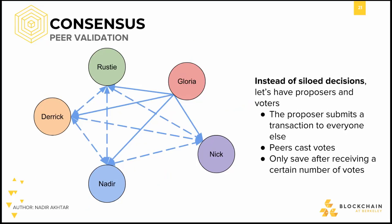Instead of individuals doing their own validation of transactions, we can set up a voting system. The problem with our previous version of consensus was that there wasn't any consensus. Instead of making siloed decisions, let's implement a system of proposers and voters. One person at a time makes a proposal about an update, and everyone else votes on whether or not to accept the proposal. The person who wants to make a transaction sends the transaction to everyone else in the entire network, not just the recipient of bitcoins. Everyone on the network then casts votes based on whether the transaction they saw was valid or not. Only after receiving a majority does the transaction get saved. There are blue lines from Gloria to the rest of the network to indicate she is making a transaction to Nadir, and dashed blue lines from each node to everyone else as an indication of communication about the received transaction and a vote for or against its validity.